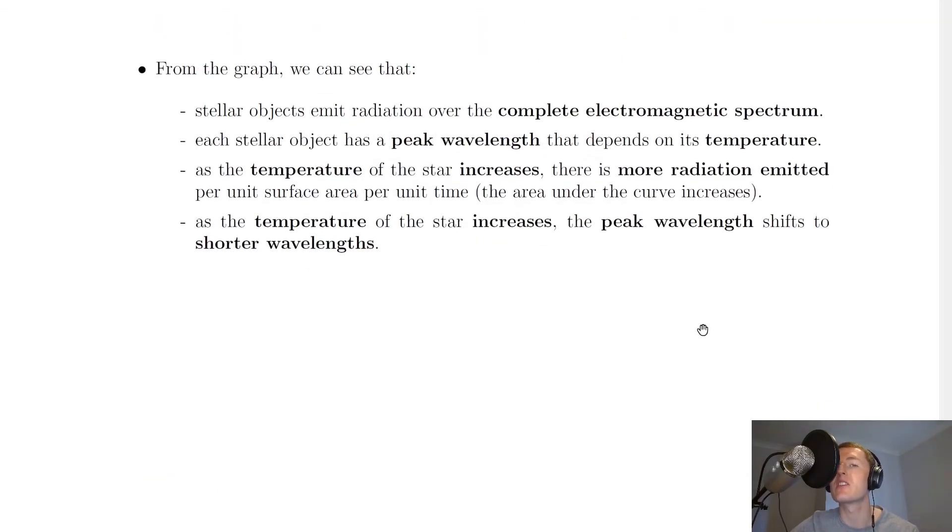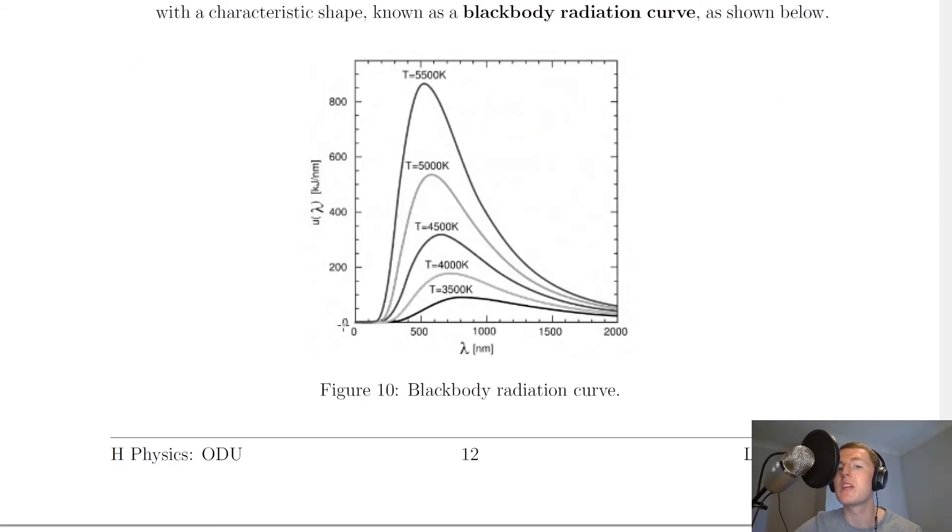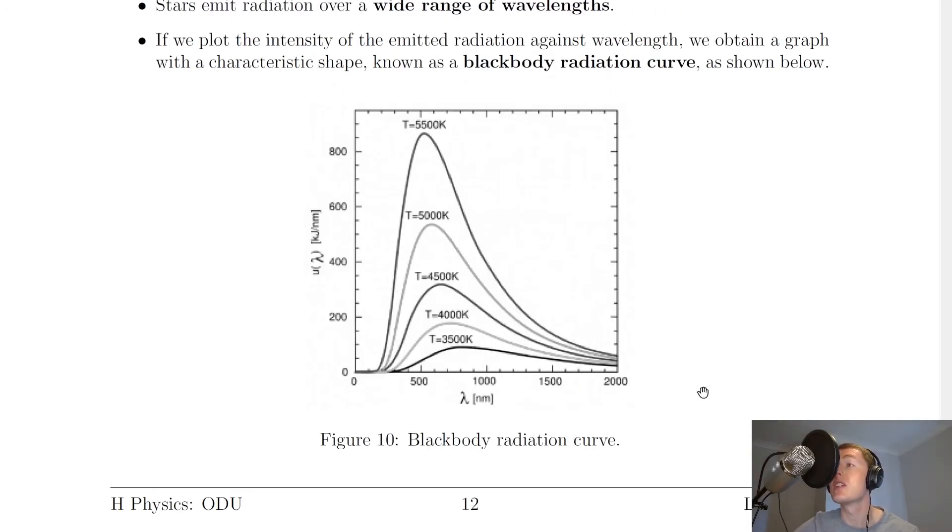So let's look at summarising some of the things from the graph. From the graph we can see that stellar objects emit radiation over the complete electromagnetic spectrum. So that just means over all of the wavelengths, all of the colours. And we can see that from the graph because we're going from 0 nanometres all the way to 2000 nanometres. We're definitely including the visible spectrum there as well, which was about 400 nanometres to about 700 nanometres.